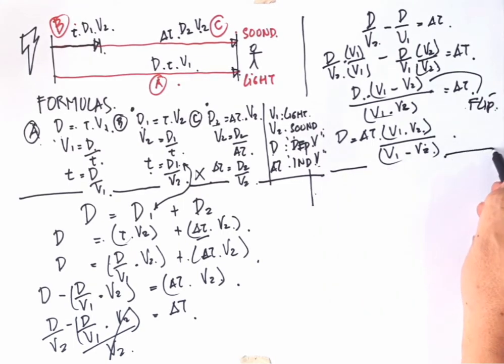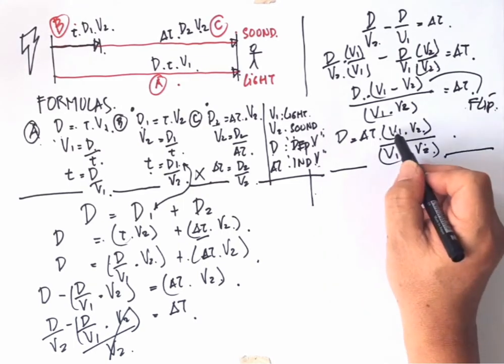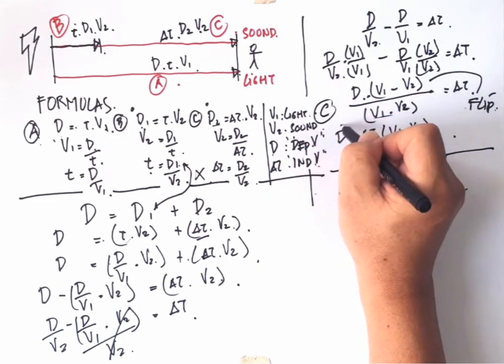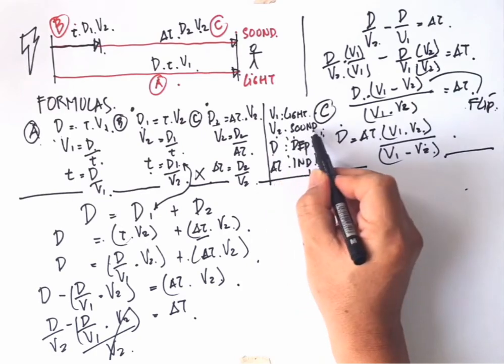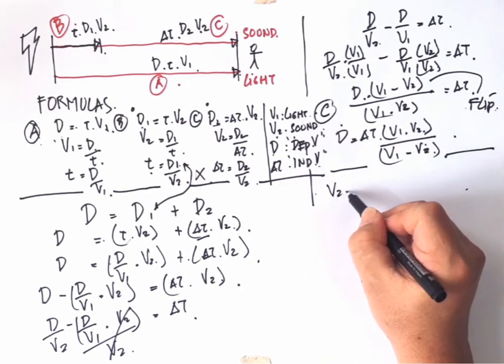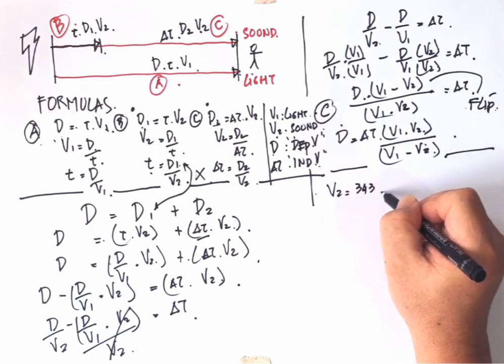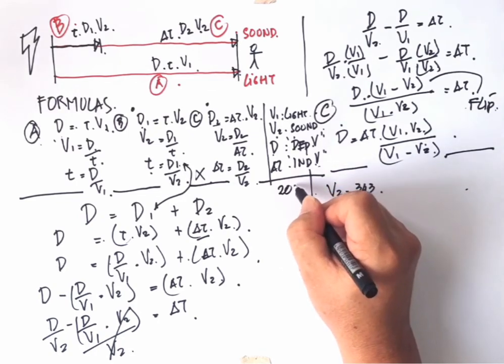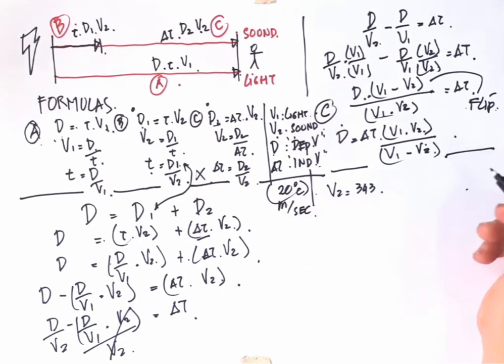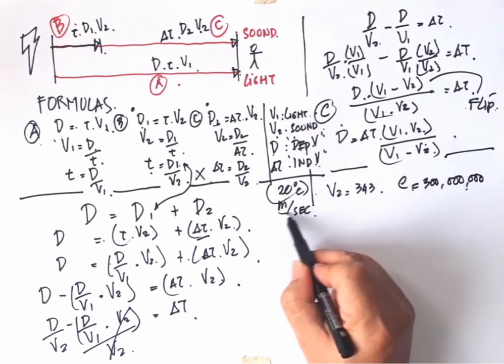I think we are done with algebra. Now let us turn this to physics terms. Light velocity will be denoted as C and sound velocity still using V2. So sound velocity will be 343 meters per second at 20 degrees Celsius, and light velocity will be 300 million meters per second.